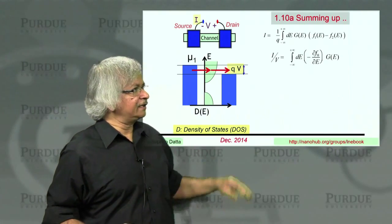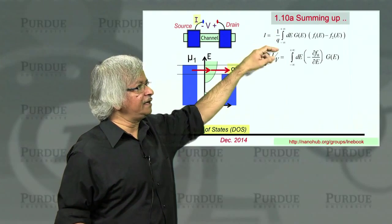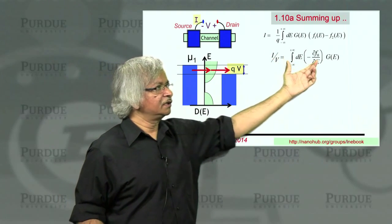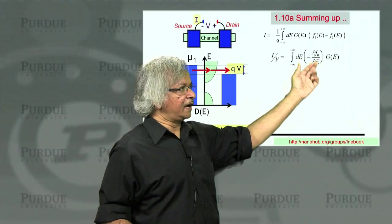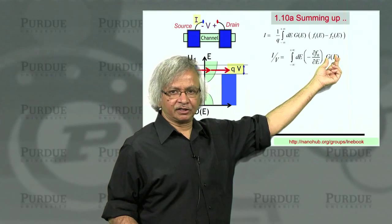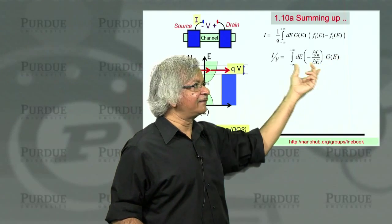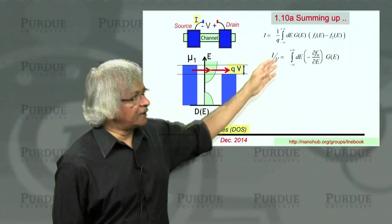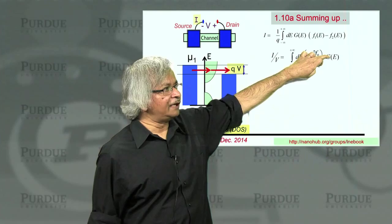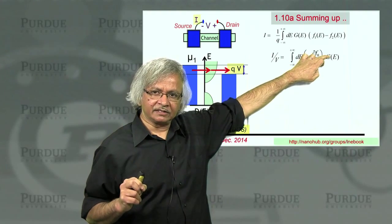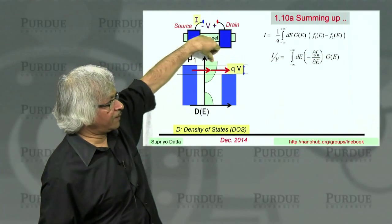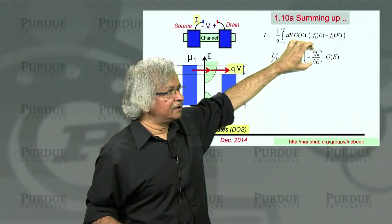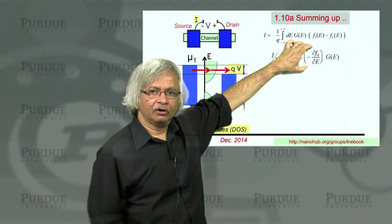Assuming a small applied voltage, you can obtain an expression for conductance—current divided by voltage—given by an average of the conductance function over energy. At low temperatures, this function is very sharp, so only the value at the Fermi energy matters. At relatively high temperatures, you have to average over an energy window of order kT.